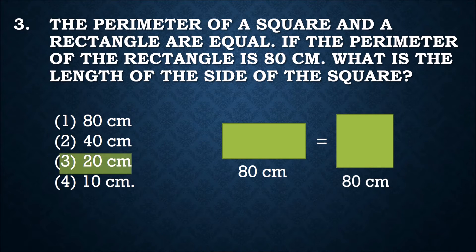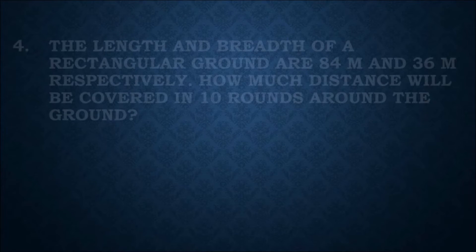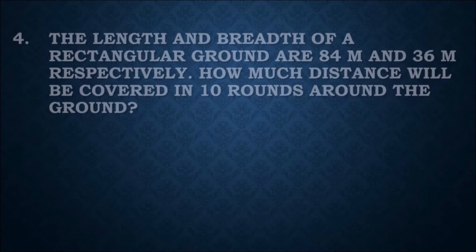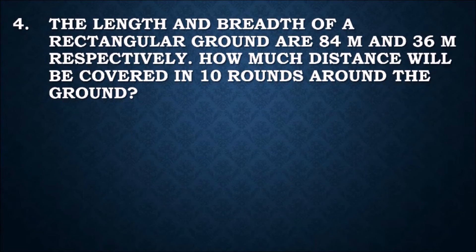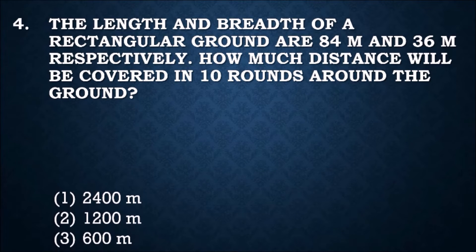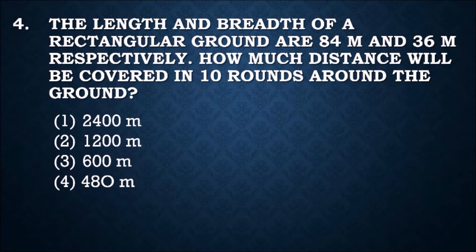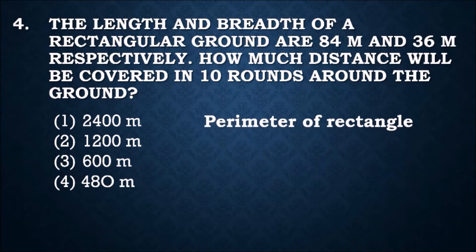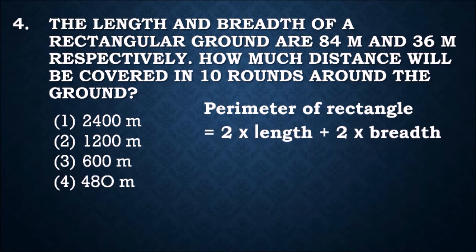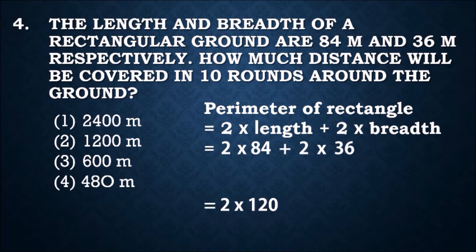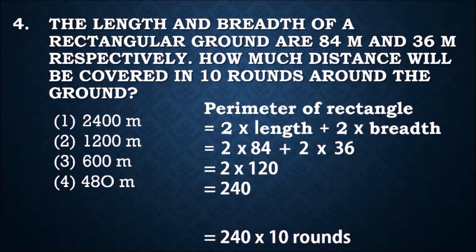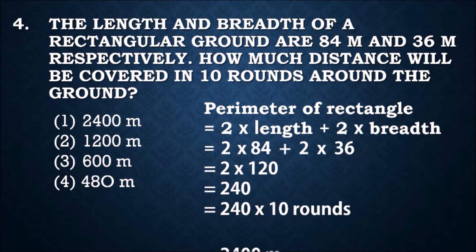Question number four: the length and breadth of a rectangular ground are 84 meter and 36 meter respectively. How much distance will be covered in 10 rounds around the ground? Options: 2400 meters, 1200 meters, 600 meters, or 480 meters. Perimeter of rectangle equals 2 times length plus 2 times breadth, which is 2 times 84 plus 2 times 36, equal to 2 times 120, so perimeter is 240 meters. For 10 rounds: 240 multiplied by 10 equals 2400 meters. First option, 2400 meters, is correct.